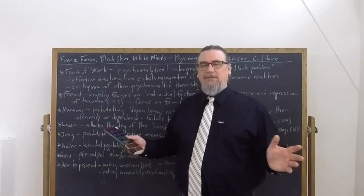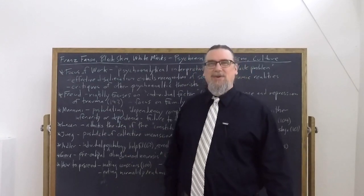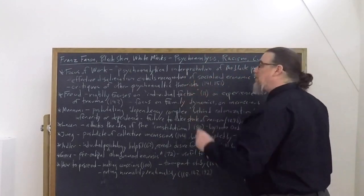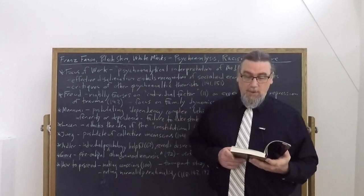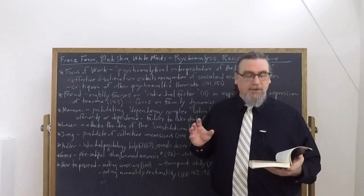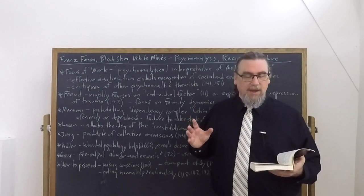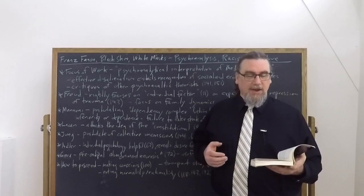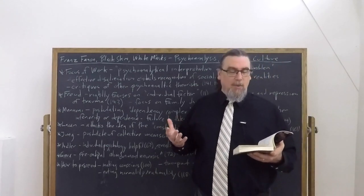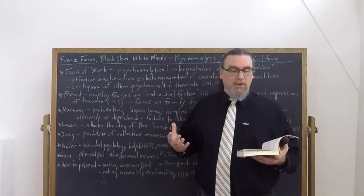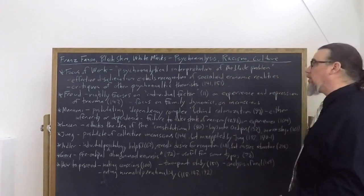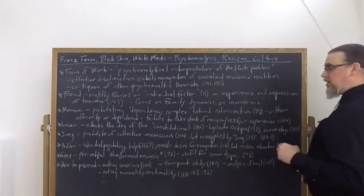Freud insisted the individual factor be taken into account through psychoanalysis. He substituted for a phylogenetic theory, the ontogenetic perspective. This is Fanon: it will be seen that the black man's alienation is not an individual question. Beside phylogeny and ontogeny stands sociogeny. This is why he talks about a sociodiagnostic. So Freud is good for focusing on the individual factor which is being left out, and he also focuses on the experience and repression of trauma.